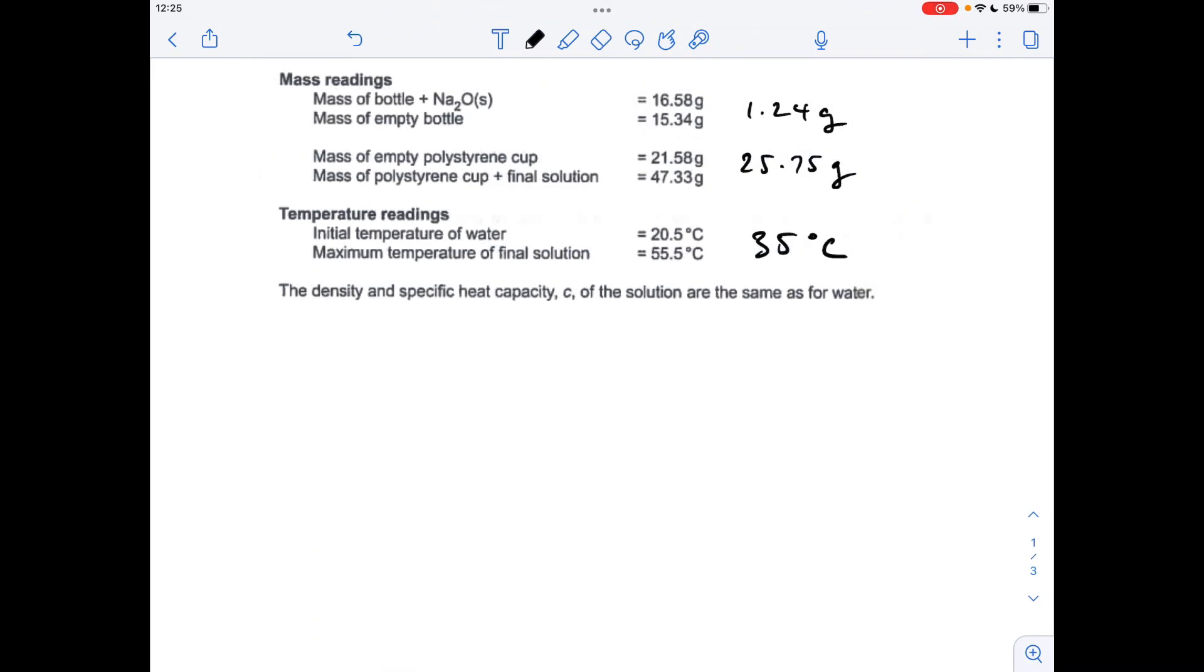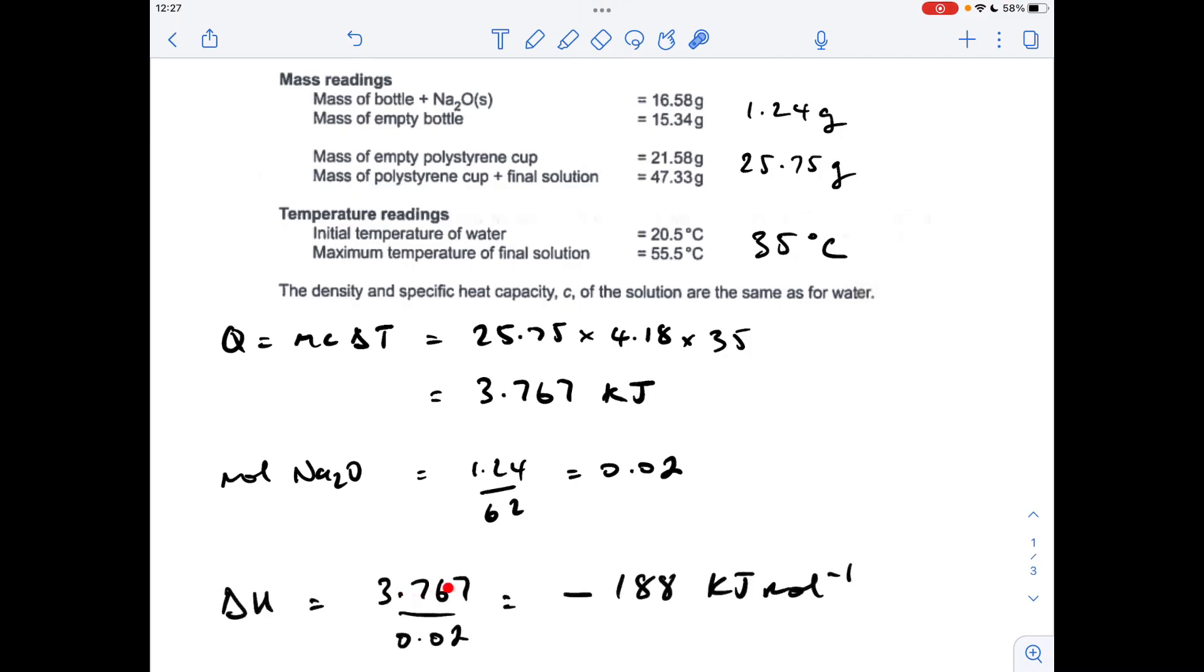So we're going to feed that into the q equals mc delta t equation, which comes out at 3.767 kilojoules. Remember the answer will come out in joules first, divide by a thousand puts it into kilojoules. The moles of sodium oxide that's been reacted is the mass over the MR, so 0.02. So the delta H, kilojoules over the moles, is 188 kilojoules per mole, but remember it needs a minus sign because the solution got hotter so it's exothermic.